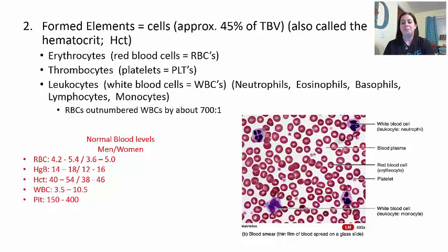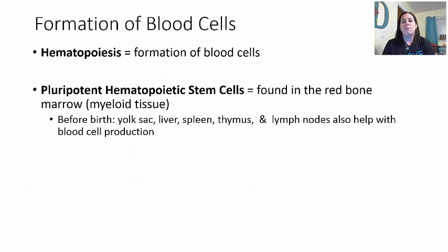The next big question is: how do we make blood cells? What if you need more red blood cells, platelets, or white blood cells? This process is called hematopoiesis—the formation of blood cells. Because red blood cells, white blood cells, and platelets all come from the same original cell line but have different jobs, stem cells must be present. These are called pluripotent hematopoietic stem cells, found in your red bone marrow.